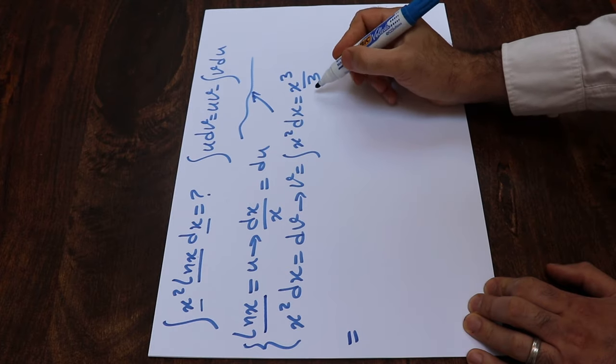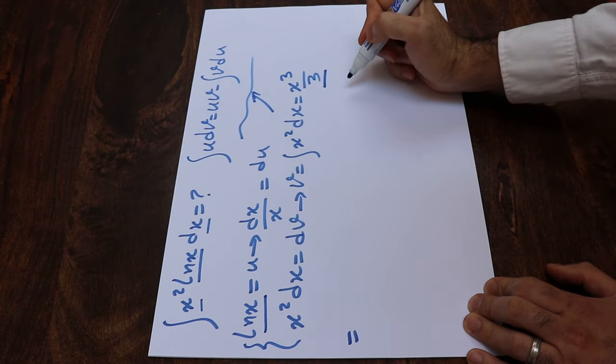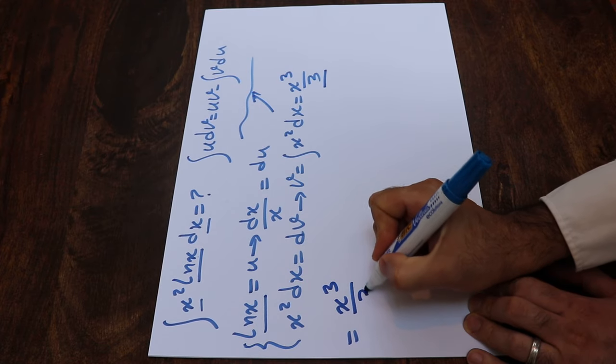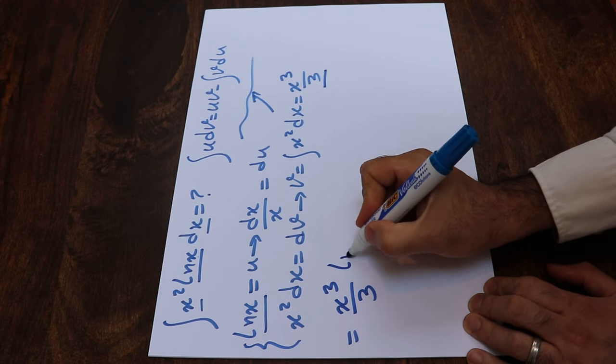u is ln(x), v is x³ divided by 3, so uv will be equal to x³ divided by 3 times ln(x).